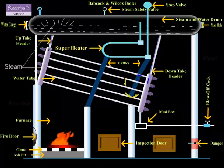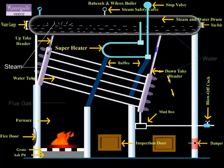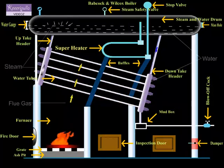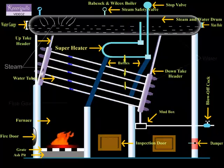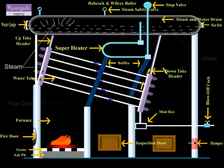Here the steam and water are separated and the steam being lighter is collected in the upper part of the drum. From the back portion of the drum, the water enters into the water tubes through the downtake header.